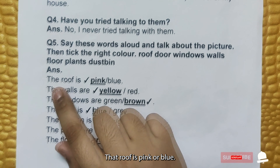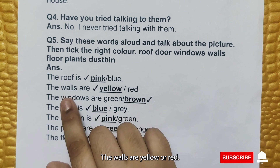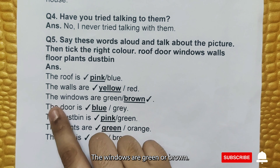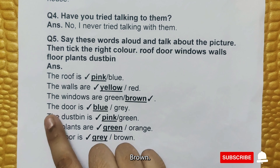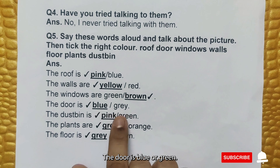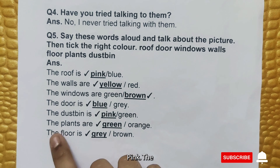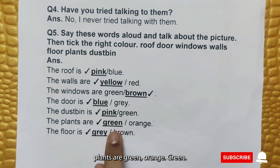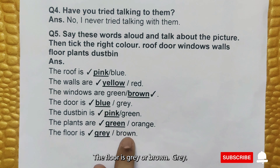Answer: The roof is pink. The walls are yellow. The windows are brown. The door is blue. The dustbin is pink. The plants are green. The floor is gray.